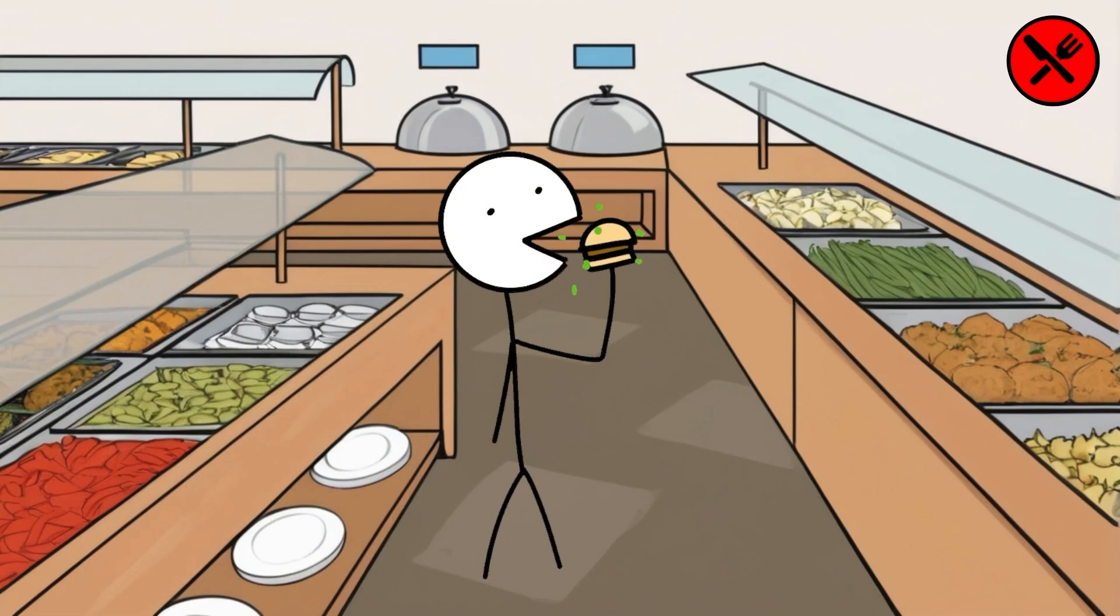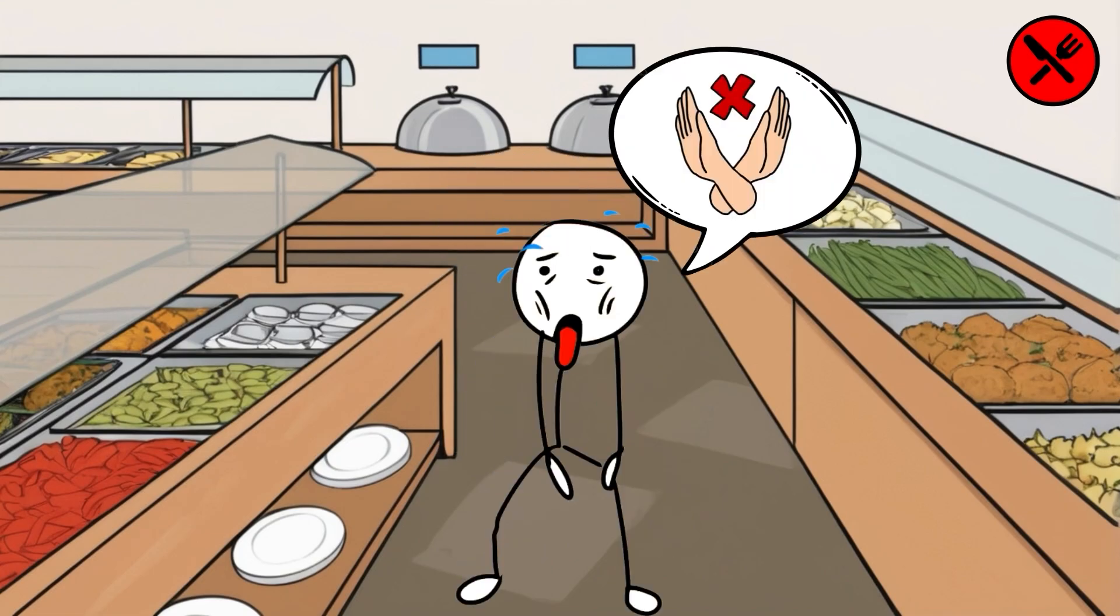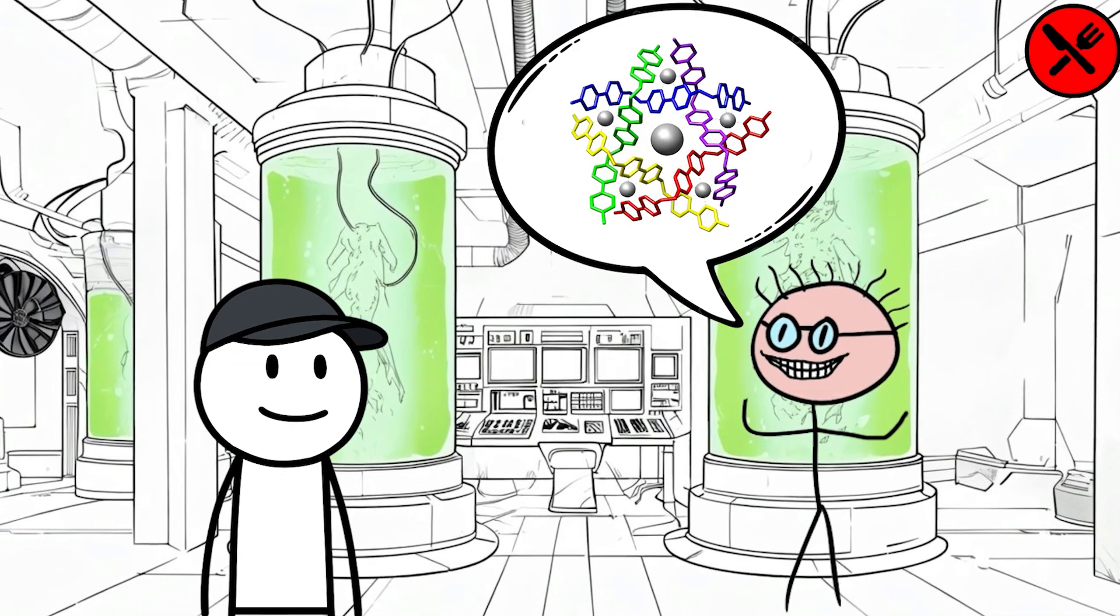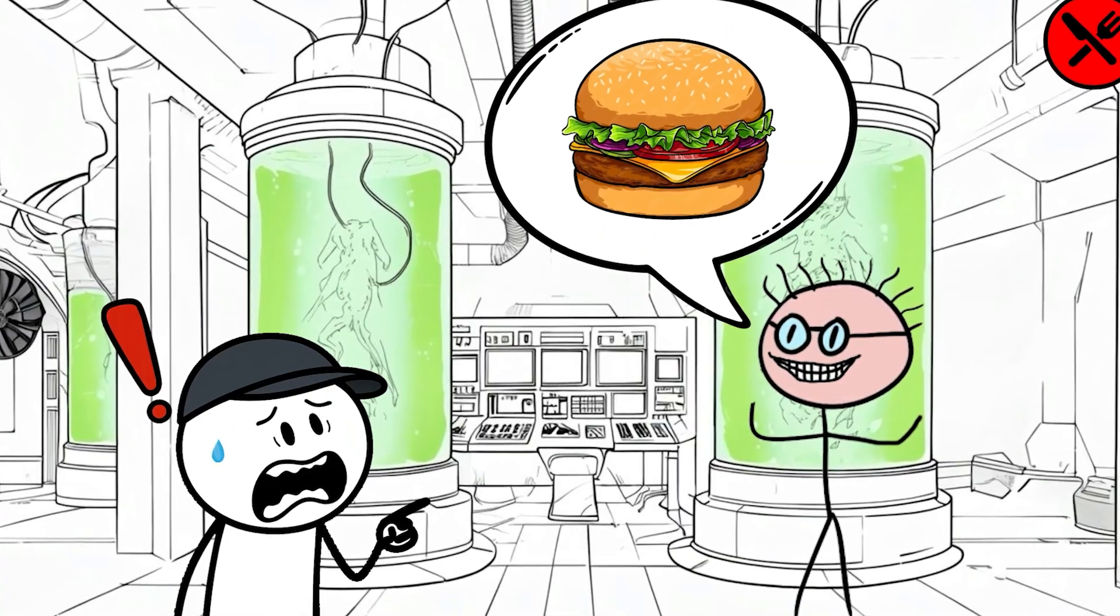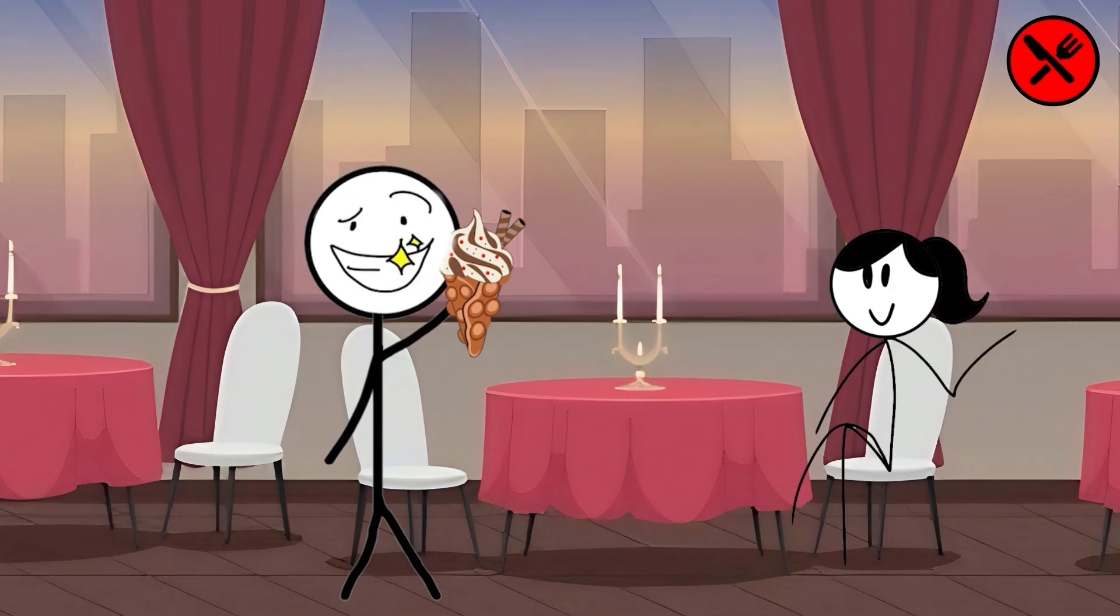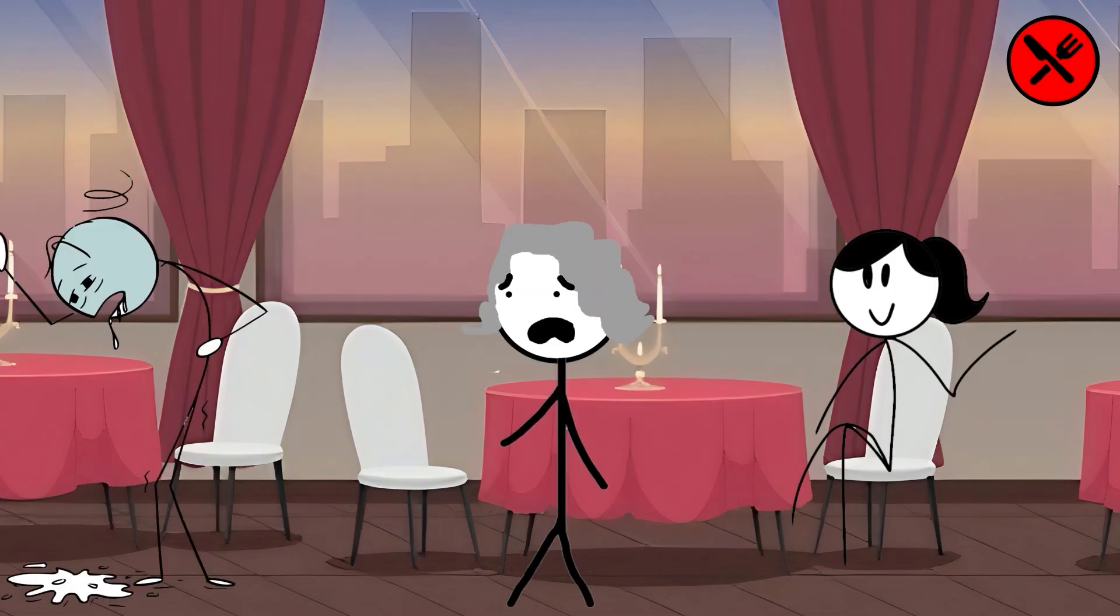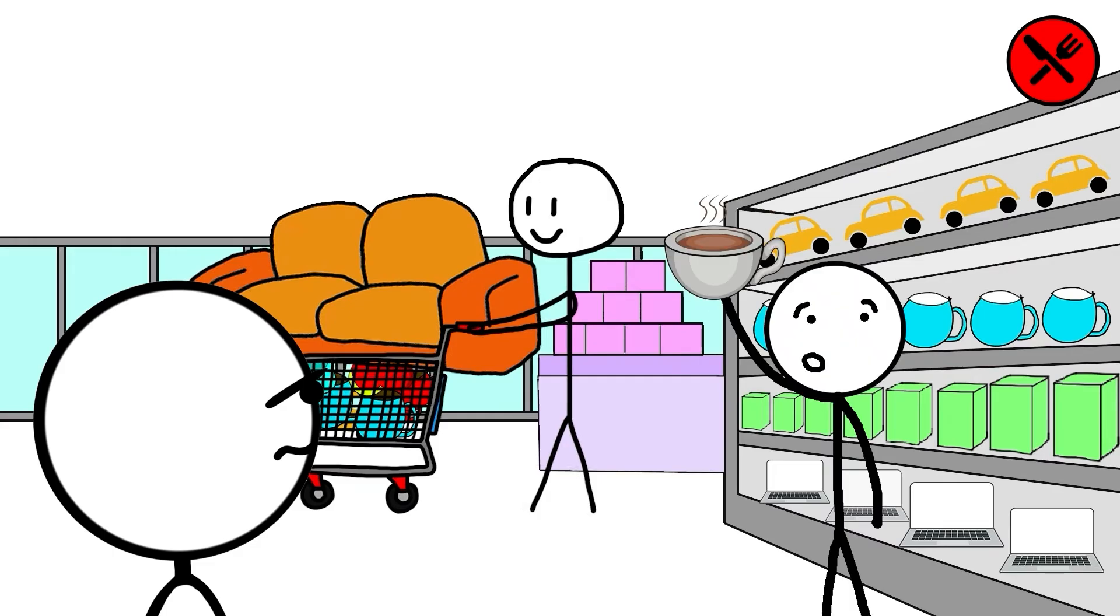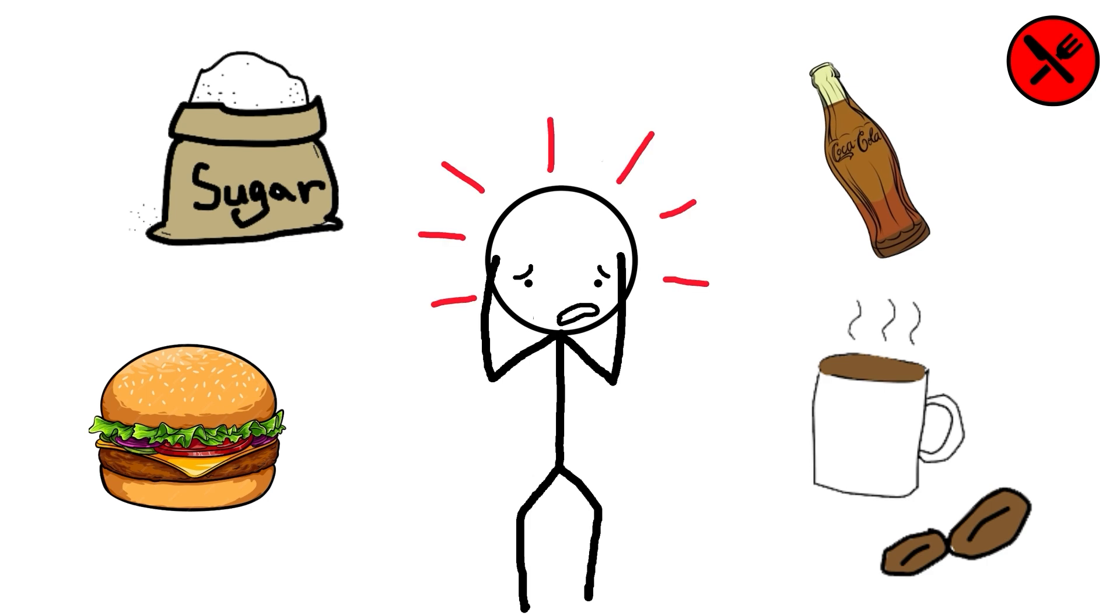Supertaster mutation. Some foods trigger rejection from the first bite, not due to texture nor prejudice, but because they activate an extraordinary sensory response. In certain people, the TAS2R38 gene has a variant that increases sensitivity to flavors. This group is known as supertasters. They do not need to taste much to detect compounds that others fail to notice. The problem is that this sensitivity comes without a filter. Everything comes with more intensity. Broccoli, black coffee, even certain sweeteners. For them, everyday food is perceived as more extreme.